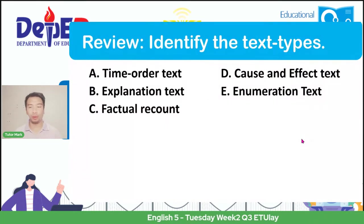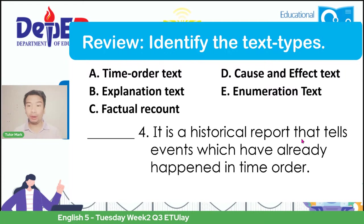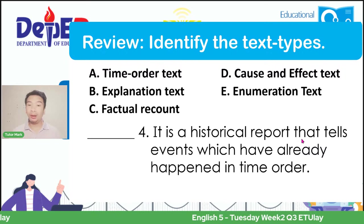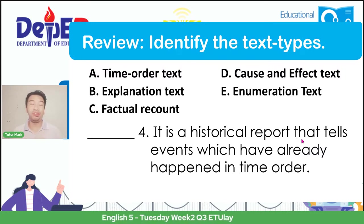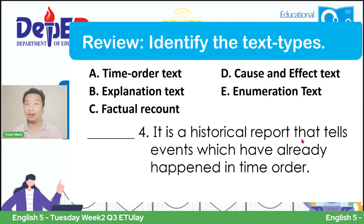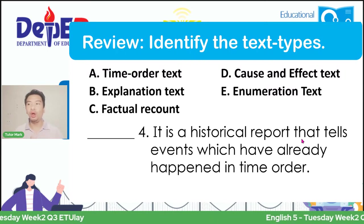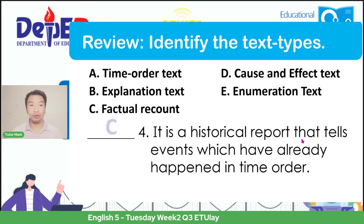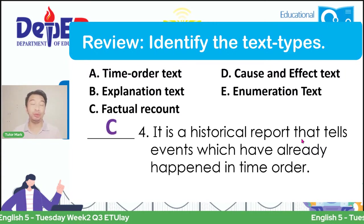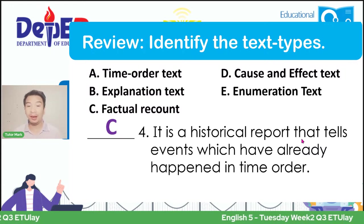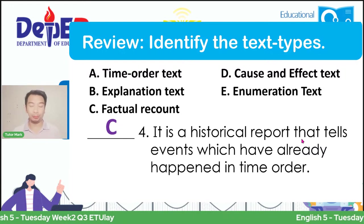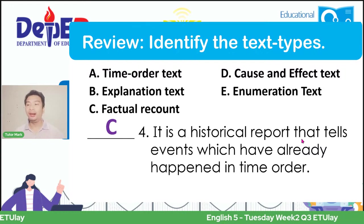Now we move on to number four: it is a historical report that tells us an event which has already happened in time order. Don't be confused when you see the words 'time order' because it says here there is a connected historical report. Therefore, if you choose letter C, factual recount, then you are correct—because it is based only on facts or the historical report of what happened, even if time order is mentioned.